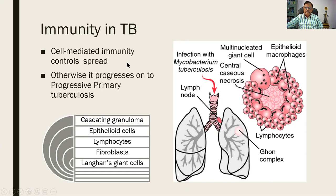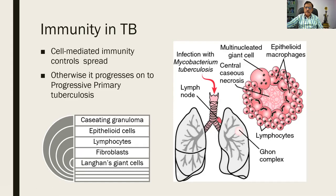Basically in tuberculosis there is cell-mediated immunity which controls the spread. When this cell-mediated immunity is compromised, it can lead to progressive primary tuberculosis. Please remember these two things.